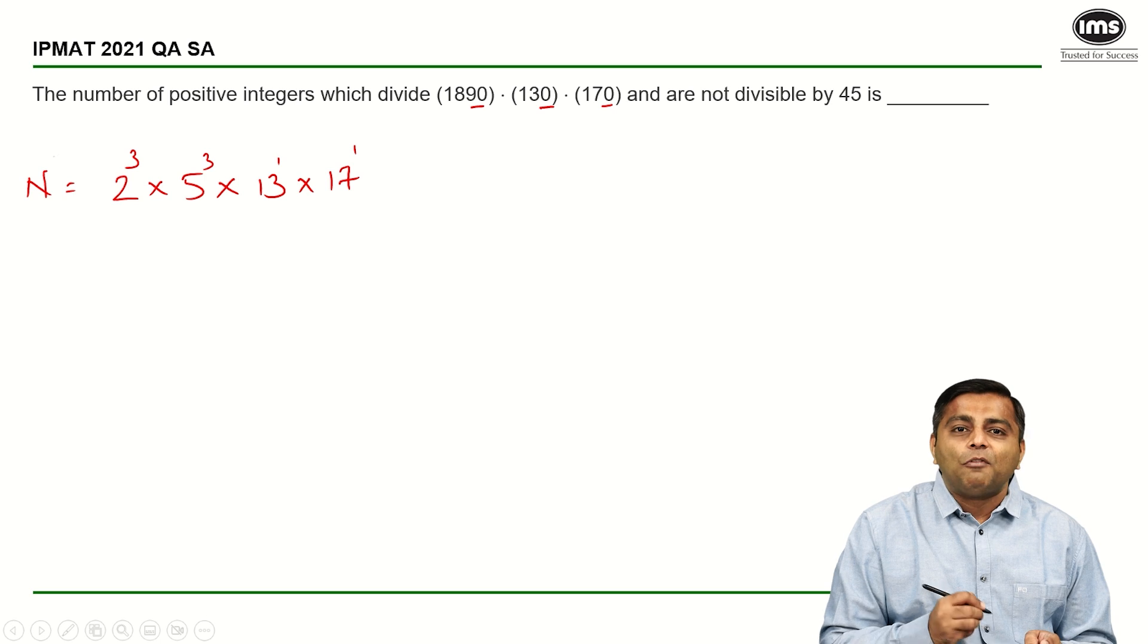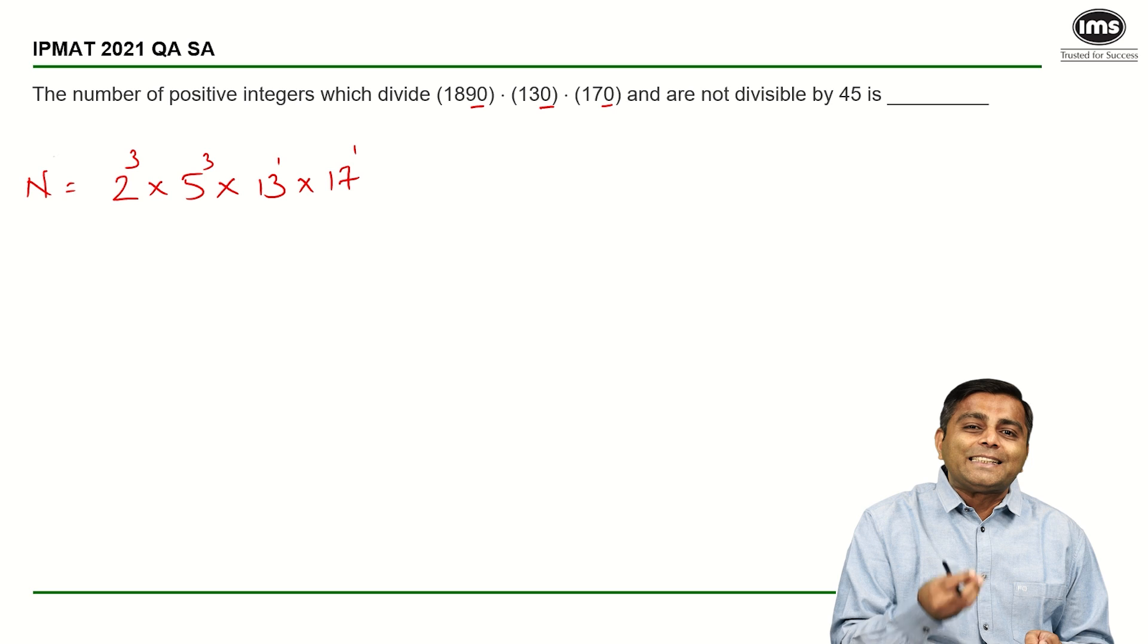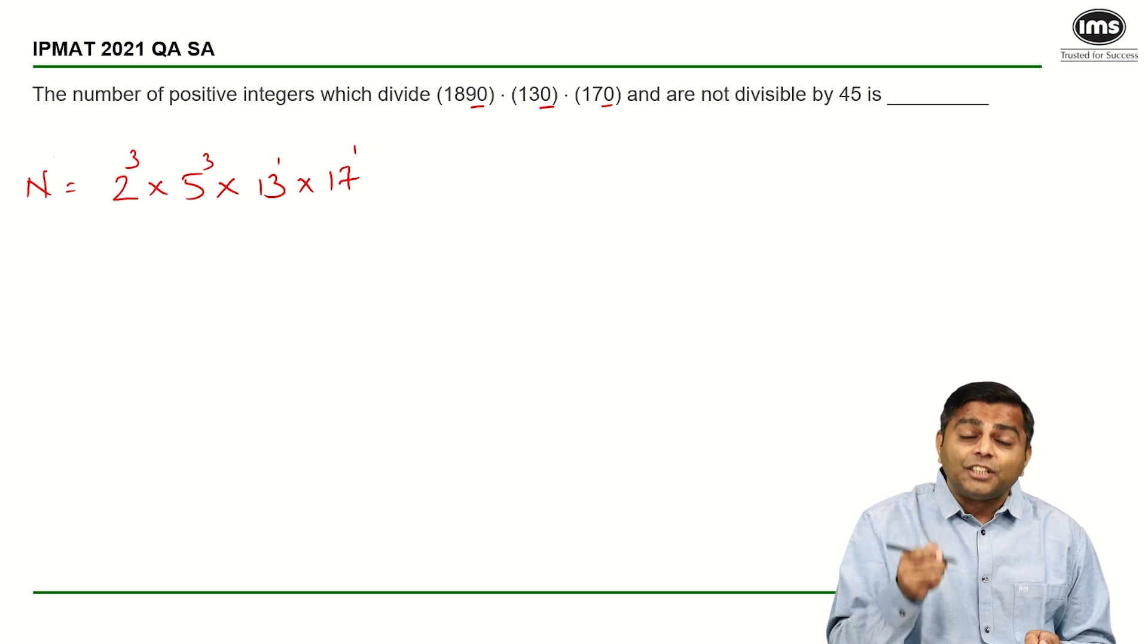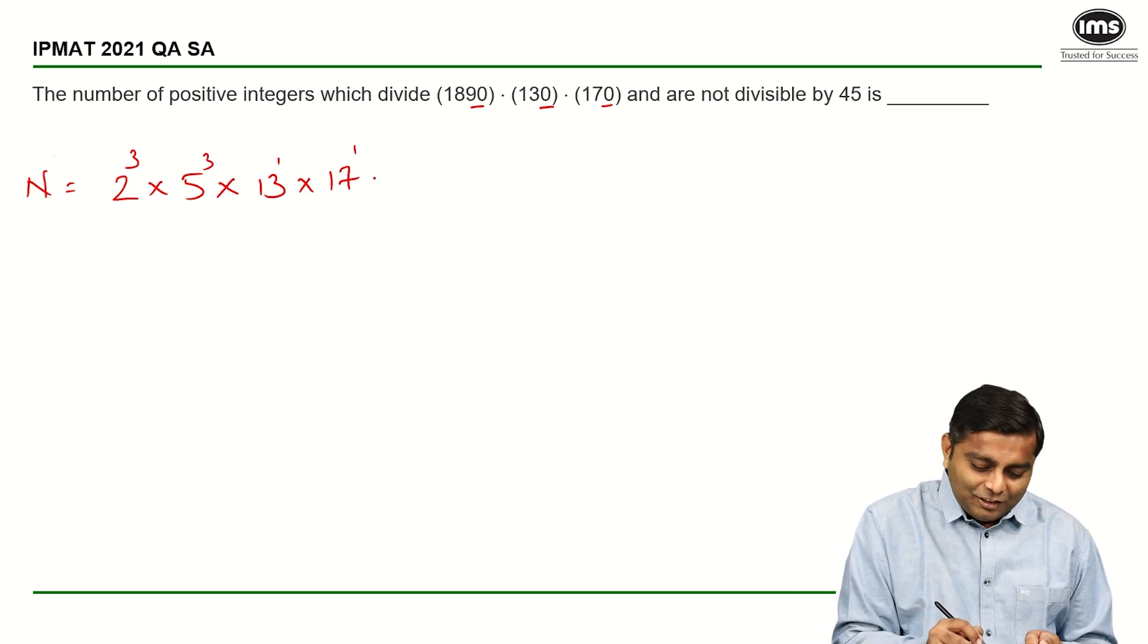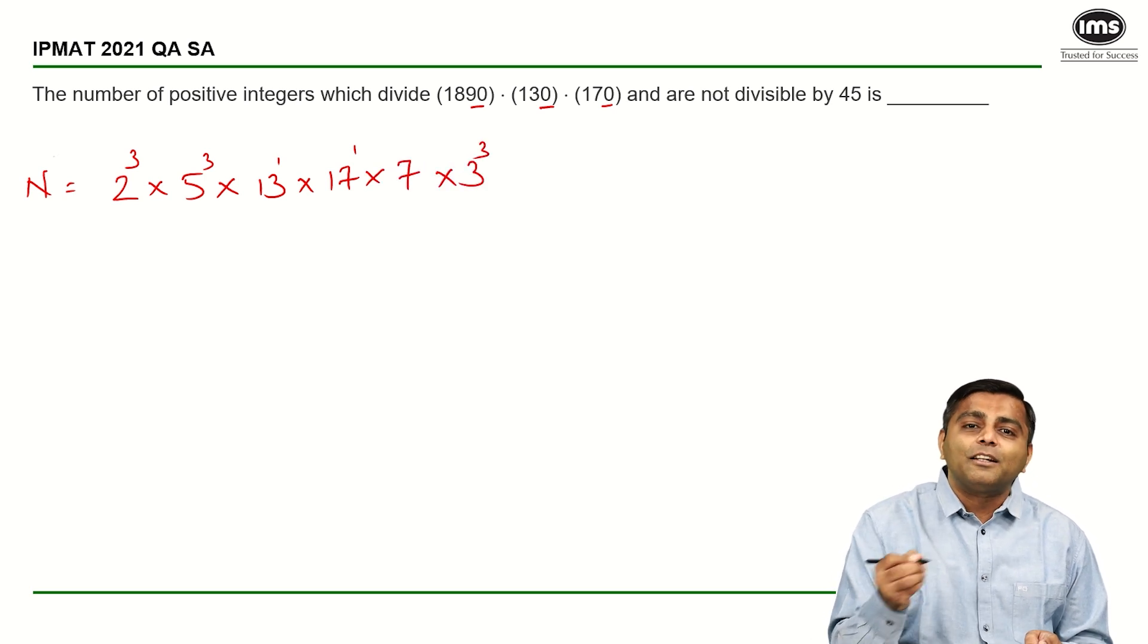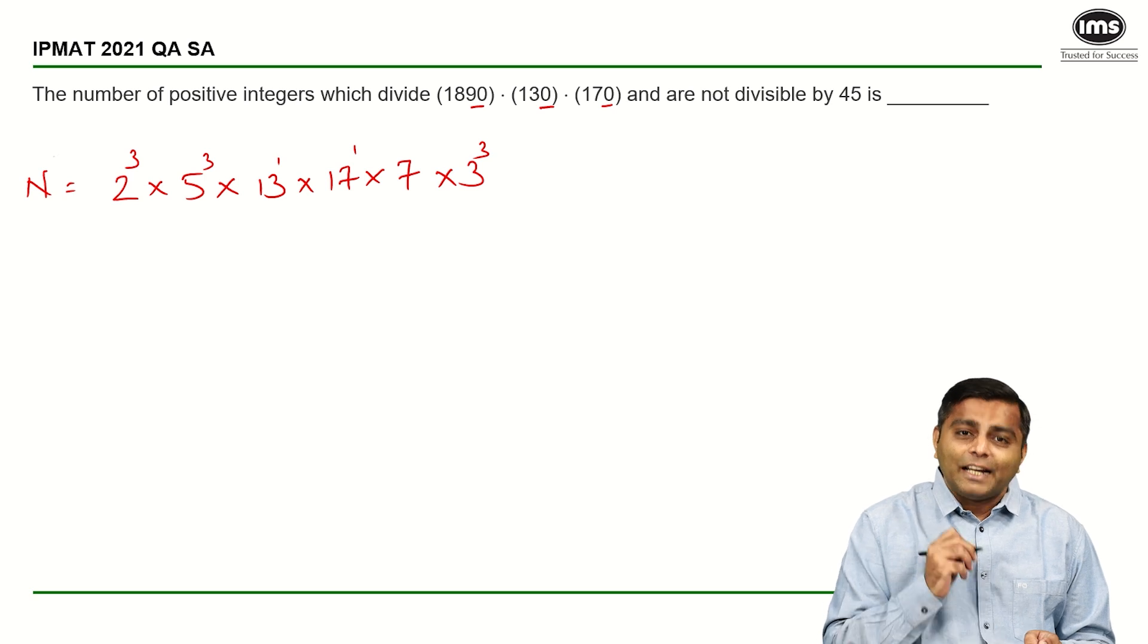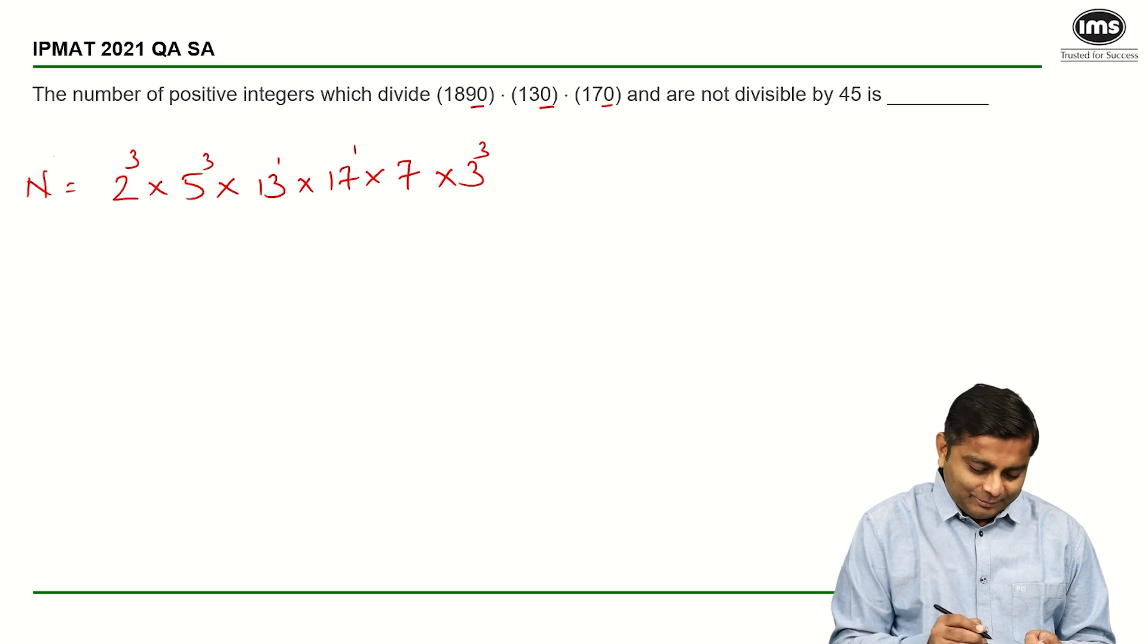Now let us look at 189. 189, but just by the look of it, you should understand that it is a multiple of 3 if nothing else. So it is 63 into 3. 63 itself is 21 into 3 and 21 is 7 into 3, which means you know that there is 1 seven and then there are 3 threes. So this is the prime factor form of the given number. Again, you obviously could have written it and done it in multiple steps, but I would advise that you think more, write less.